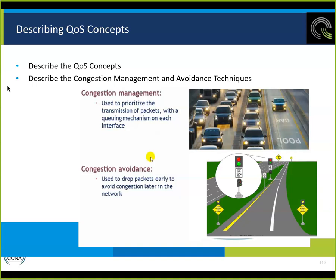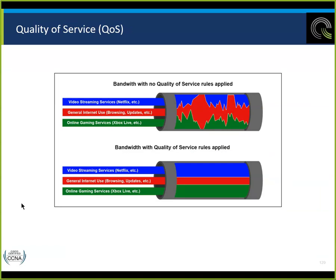The other thing about quality of service is if you've got sufficient bandwidth, you don't need to do it. This is a concept — configurations that only need to take place if we have insufficient bandwidth, if we can't do everything at once, if we can't make a phone call and watch a video and download a webpage at the same time. If you have sufficient bandwidth, you don't have to worry about it. But it's still one of the objectives we need to know how to do.